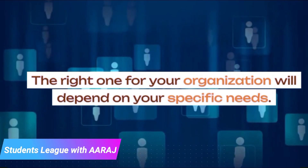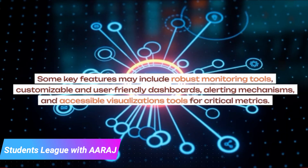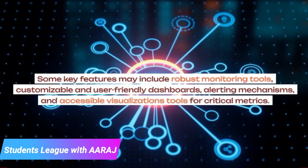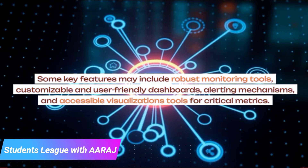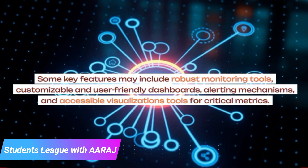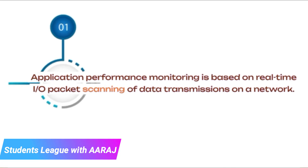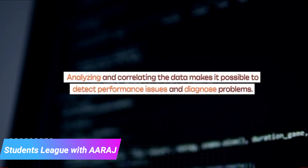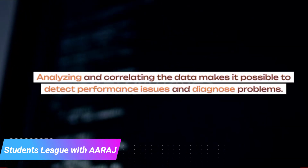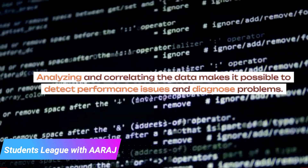The right APM tool for your organization will depend on your specific needs. Some key features may include robust monitoring tools, customizable and user-friendly dashboards, alerting mechanisms, and accessible visualization tools for critical metrics. Application Performance Monitoring is based on real-time I/O packet scanning of data transmissions on a network. Analyzing and correlating the data makes it possible to detect performance issues and diagnose problems.